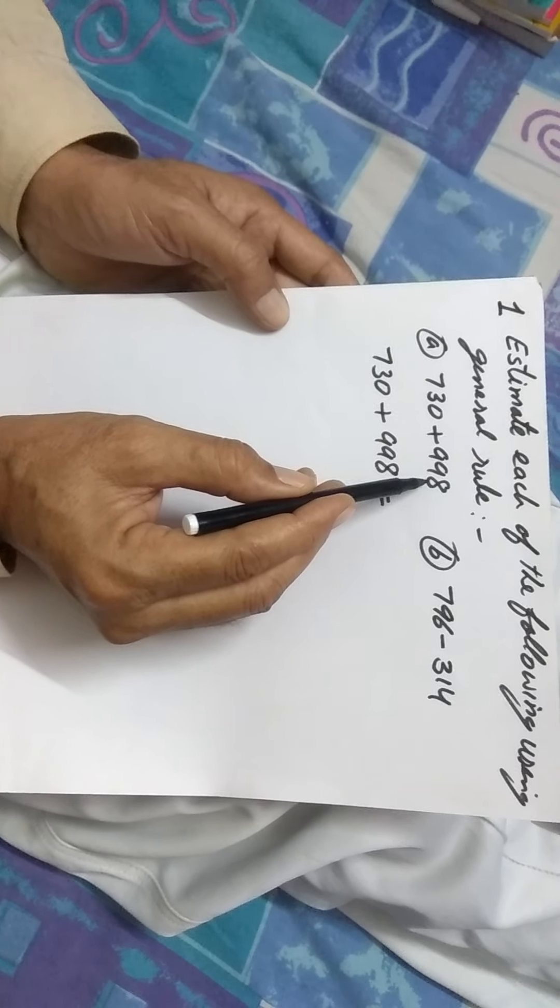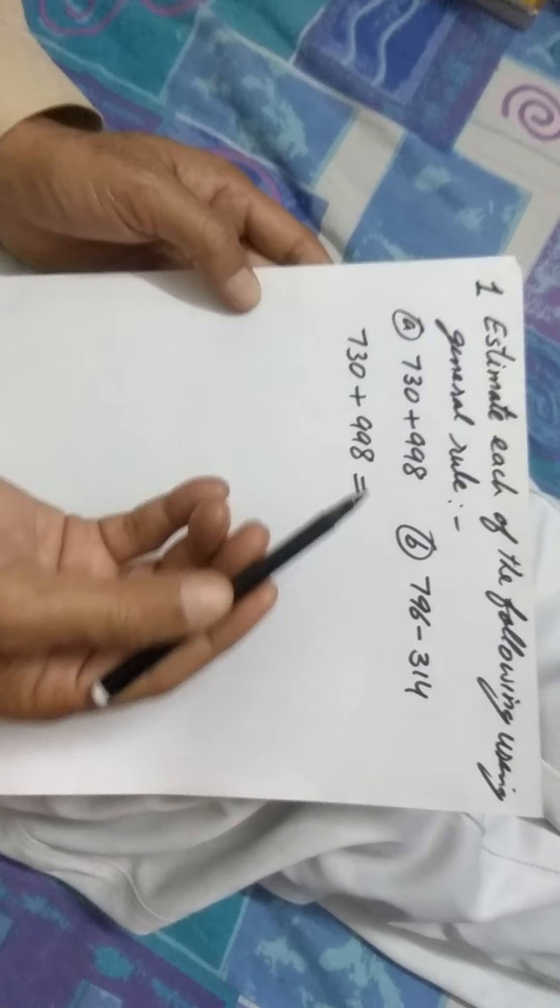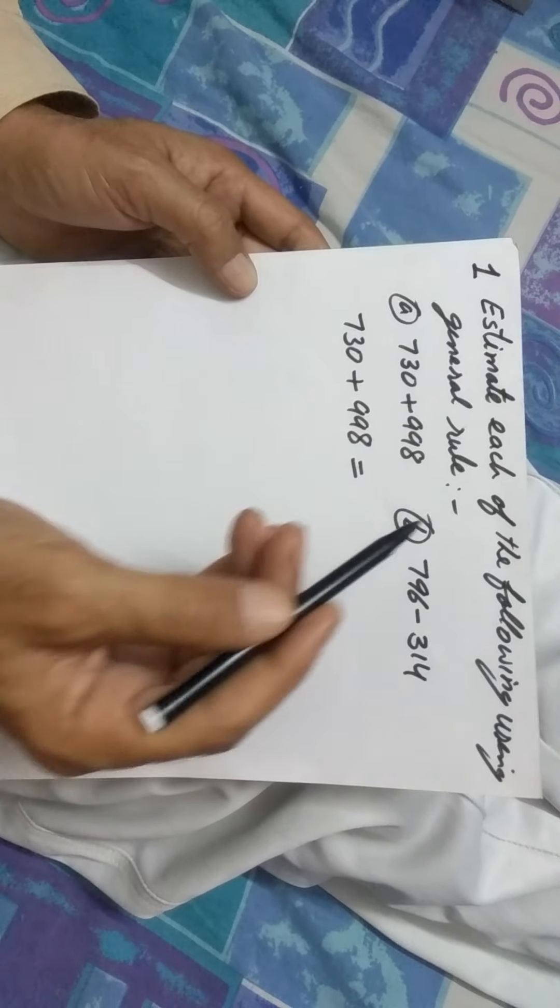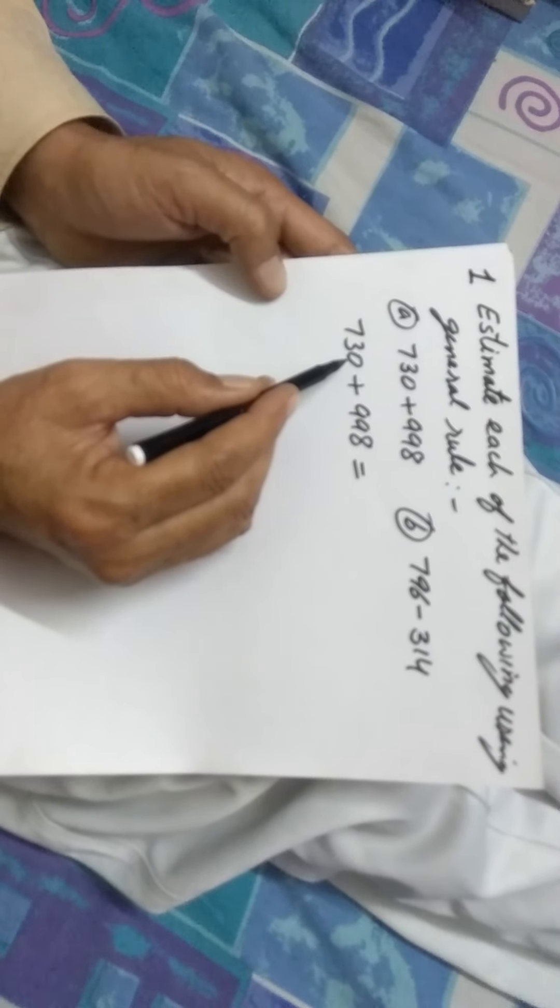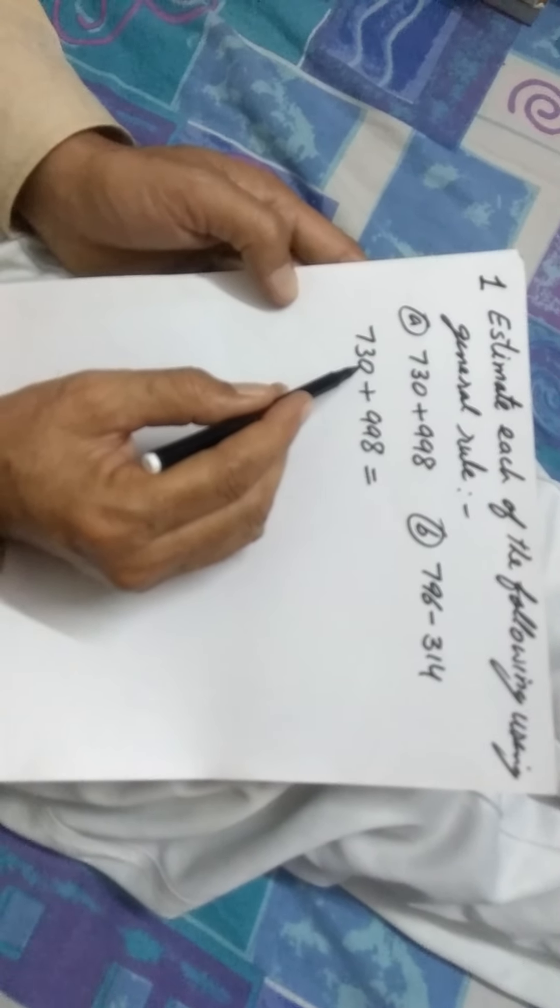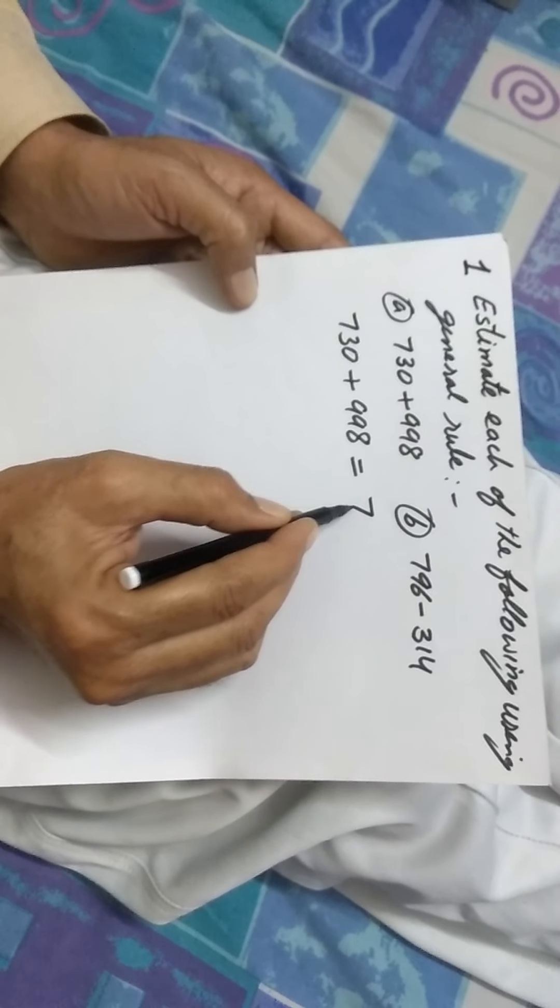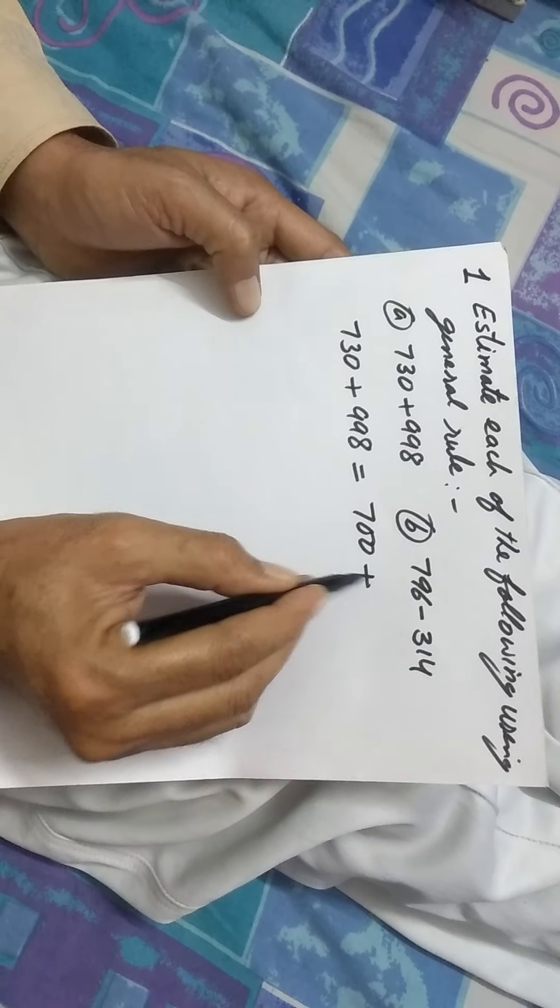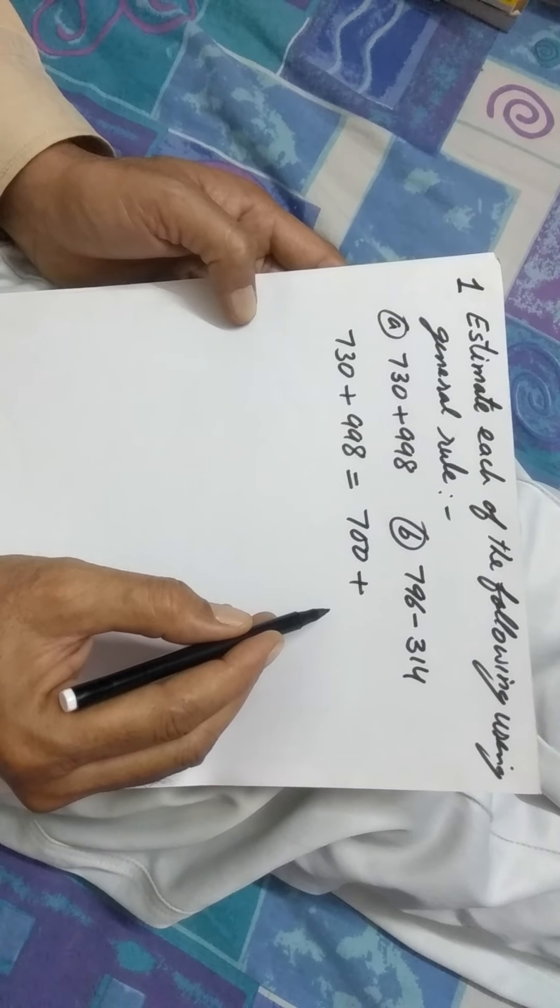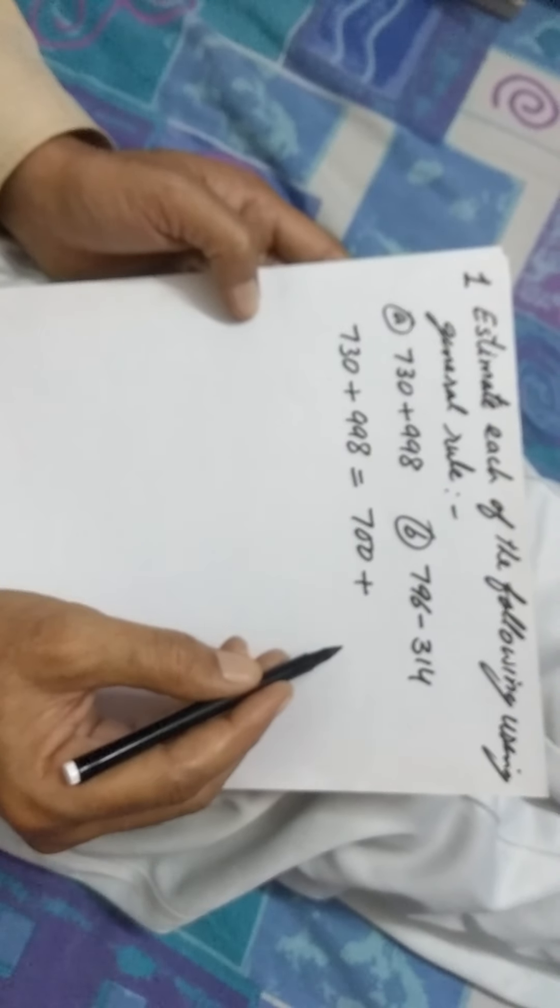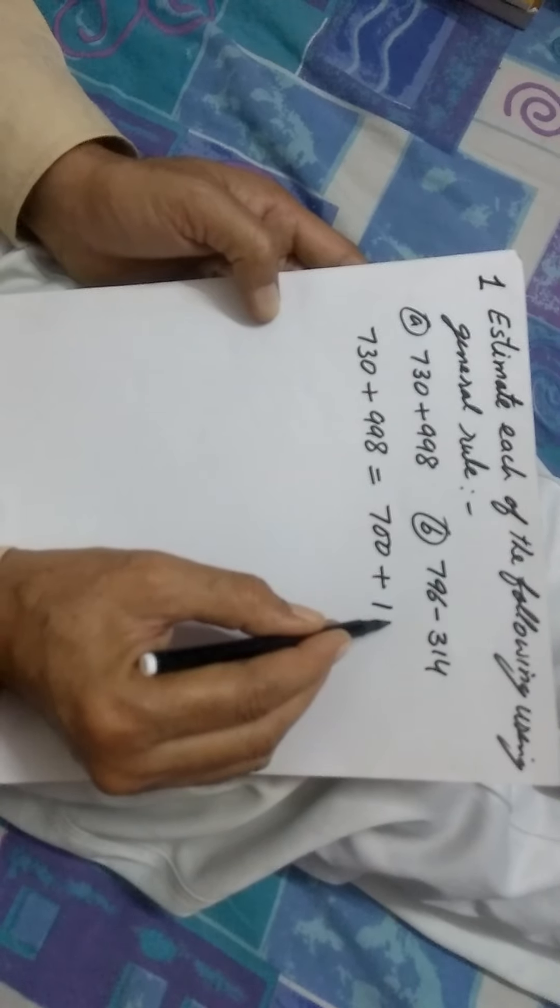It is a general rule mostly followed by your grandparents in the village background. Let me see, can you tell me the estimation of 730? See, 730, 30 is less than 50, so you can estimate it to be 700. Whereas, 998 is more than 950, therefore this is to be estimated to 1000.